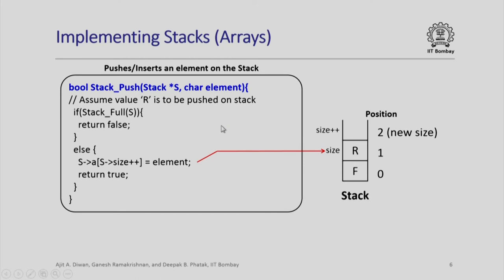Let us now look at push and pop operations, which are the main operations of the stack. Note that these are implemented as boolean operations — when I push I want to push an element on the stack, and when I pop I want to get back an element. However, whether the operation is successful or not is equally important to know, and that is why these functions have been implemented as boolean functions. The function itself will return true or false depending upon whether the operation is successful, and the element in question is passed through another parameter.